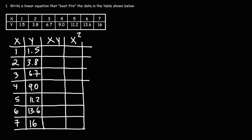For the next column, we need to multiply x and y together. So: 1×1.5=1.5, 2×3.8=7.6, 3×6.7=20.1, 4×9=36, 5×11.2=56, 6×13.6=81.6. And 7×16: 7×10=70, 7×6=42, so 70+42=112.